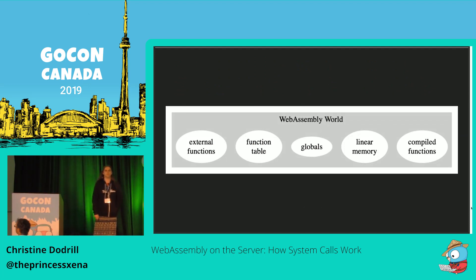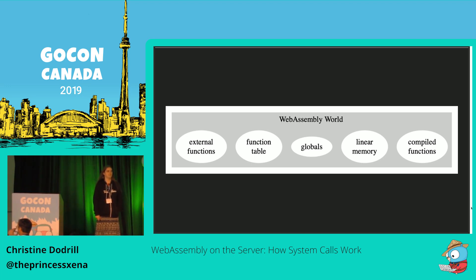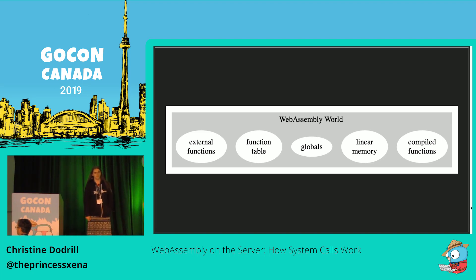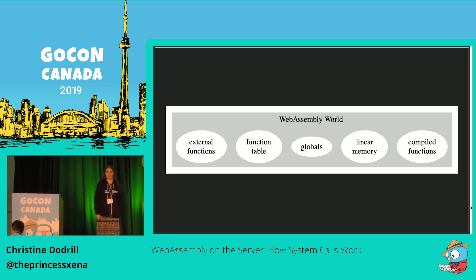In this talk I'm going to be talking about the outside world a lot, and it helps to know what's inside the world. In WebAssembly, there's only five parts: external functions, which are defined by the platform that the WebAssembly module is running on — these are also known as system calls — a function table for dynamic dispatch, globals, RAM, and compiled functions, which are separate from RAM, which is different than most other things.